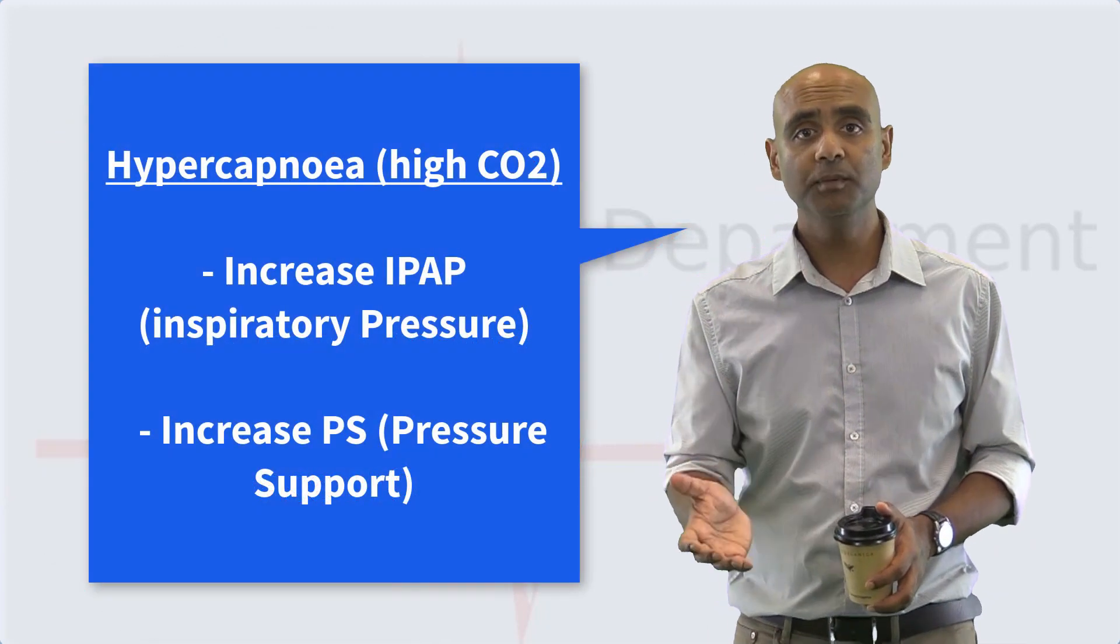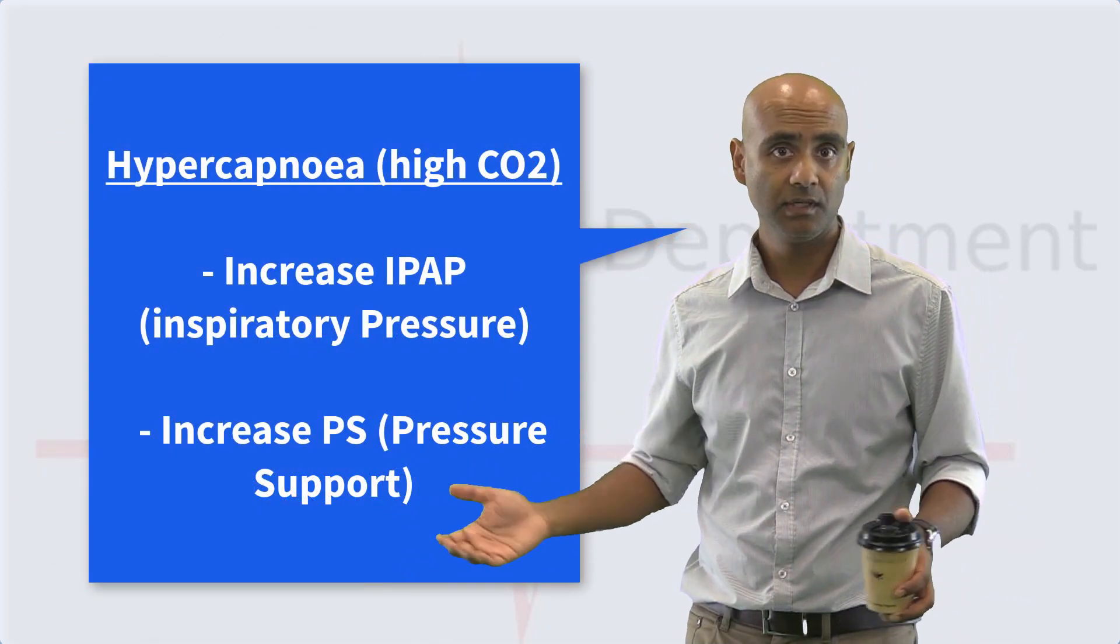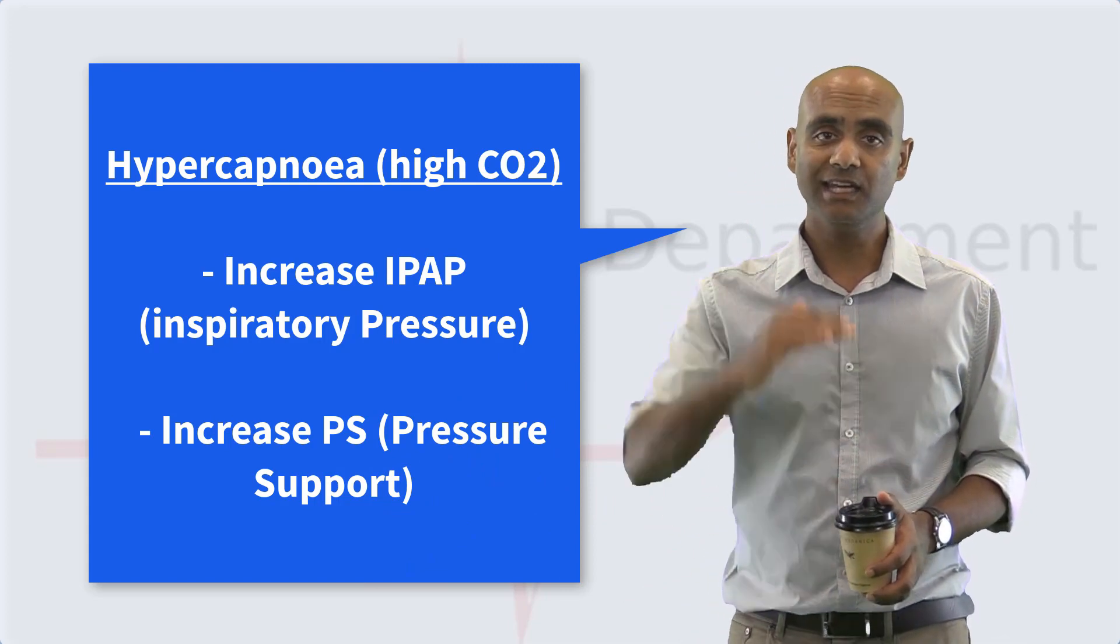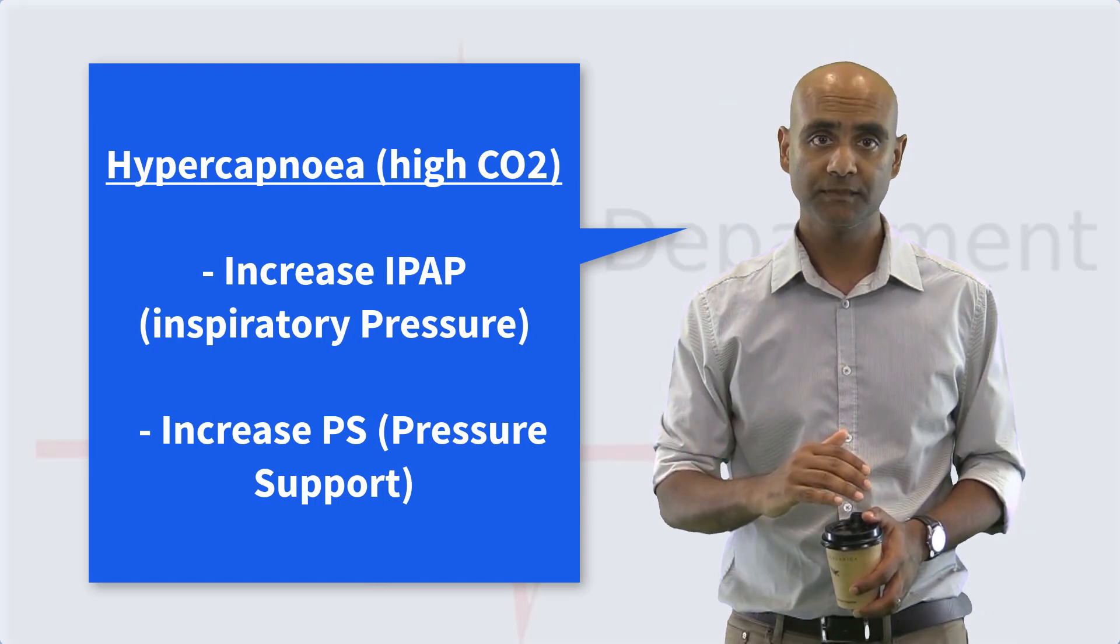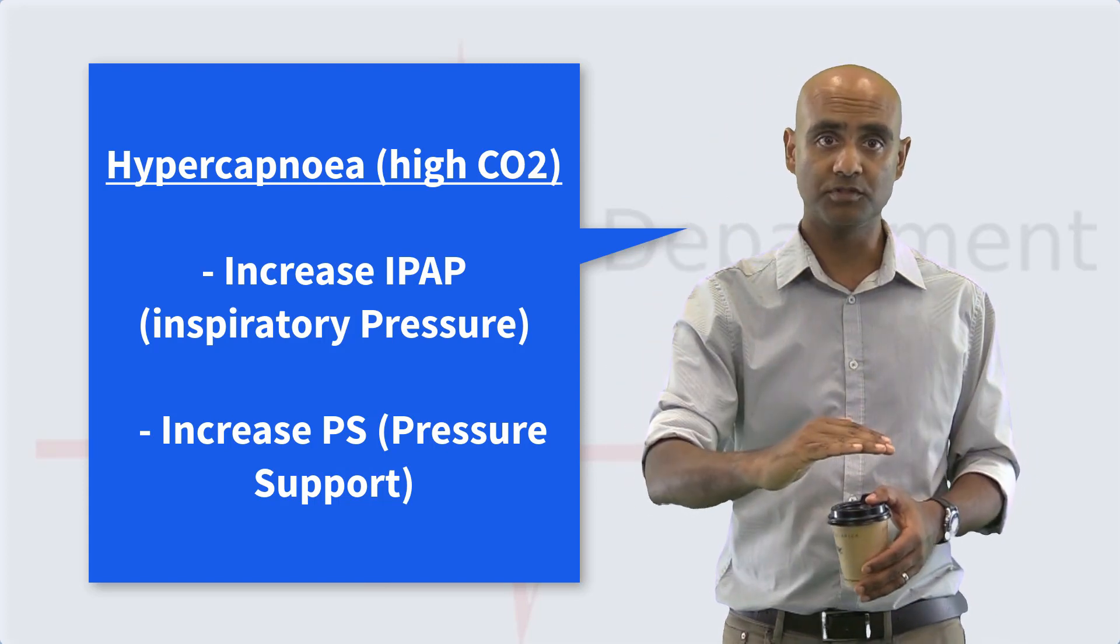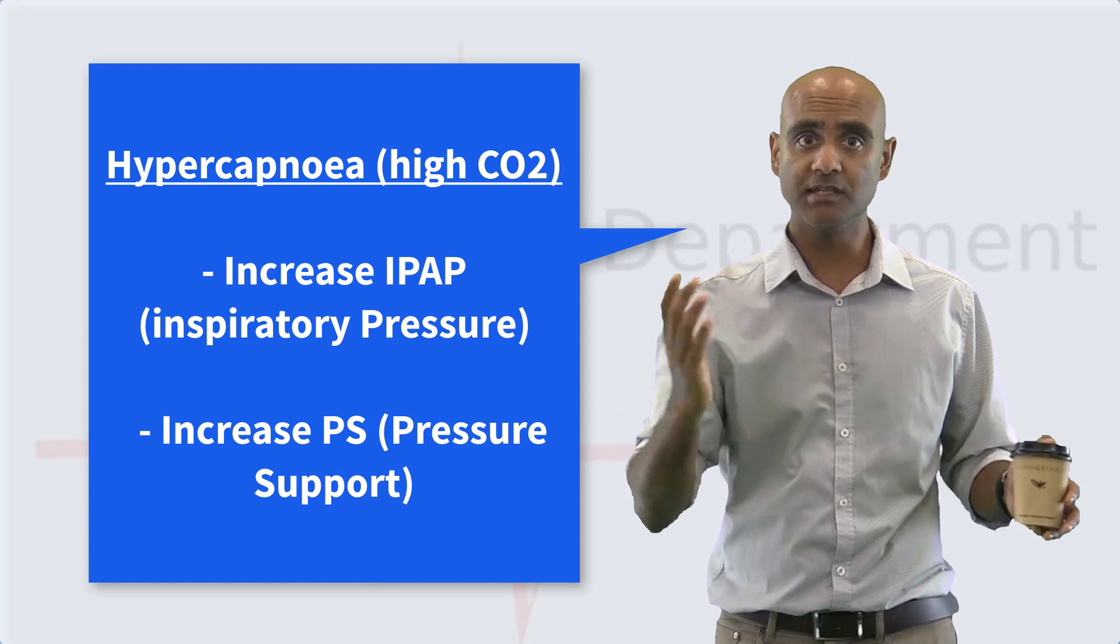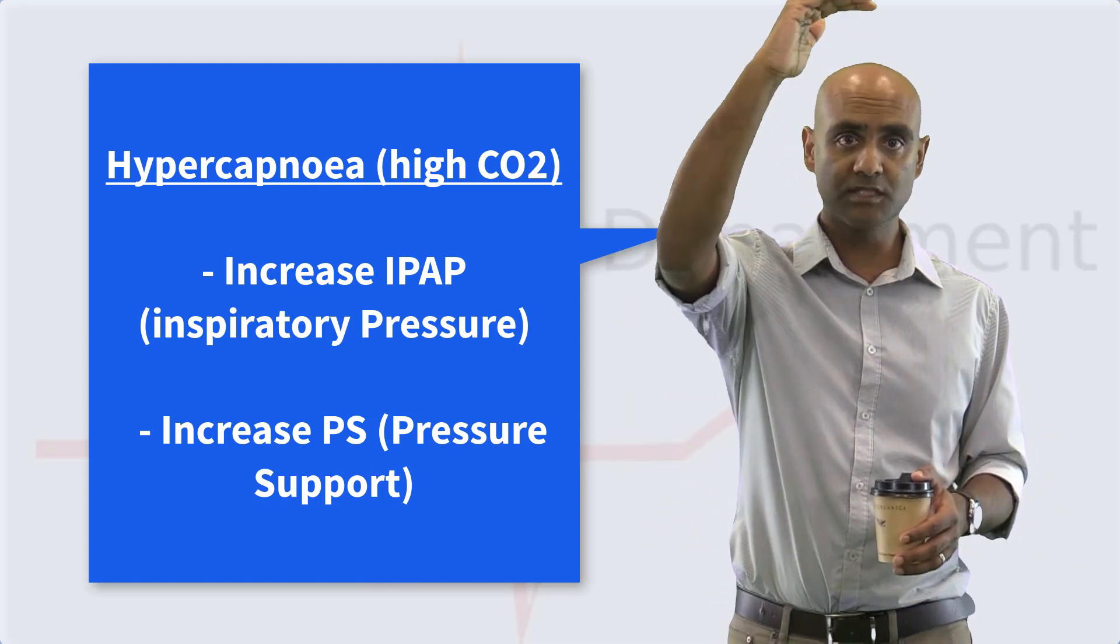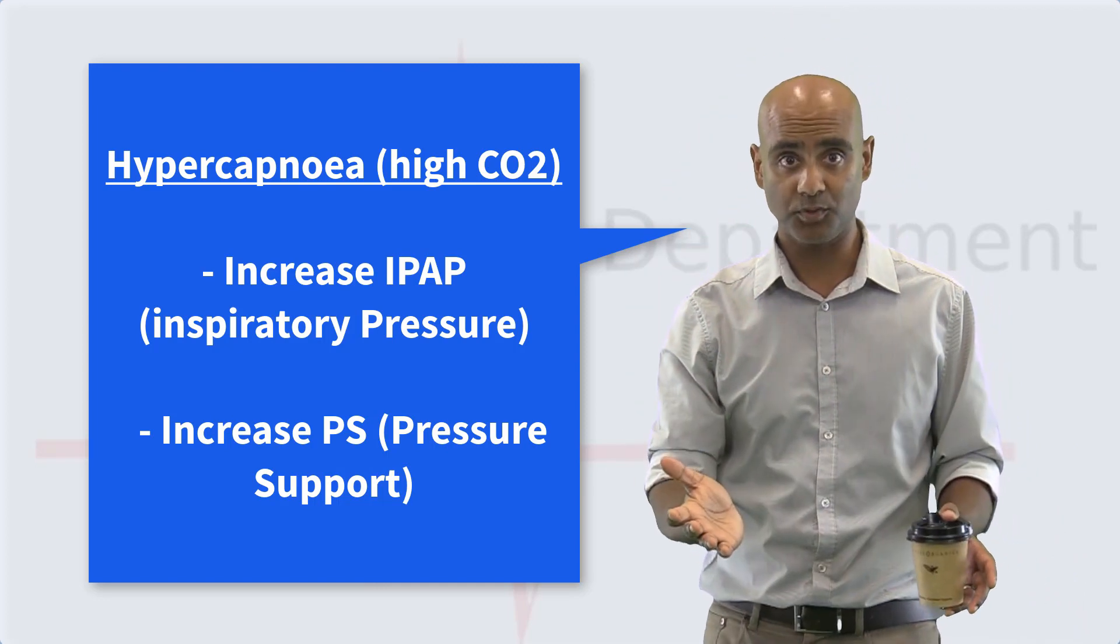If the primary problem, however, is hypercapnia, that's a high CO2, the solution is to provide an increase in the inspiratory pressure and increase the pressure support. So remember BiPAP involves both an inspiratory pressure and an expiratory pressure. The expiratory pressure alone is essentially the same as CPAP and the difference between the inspiratory pressure and the expiratory pressure is the pressure support.